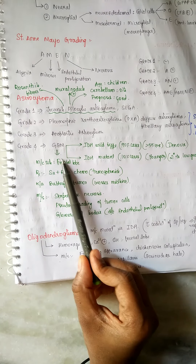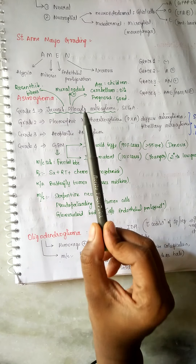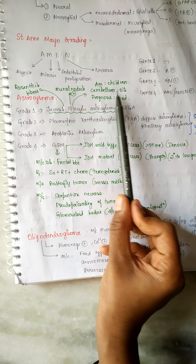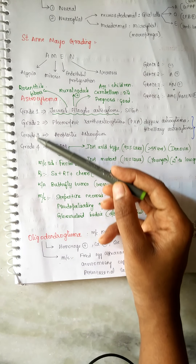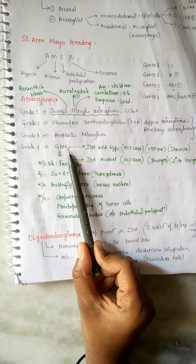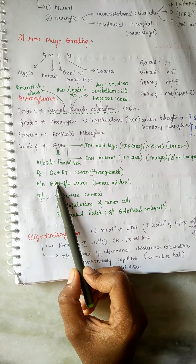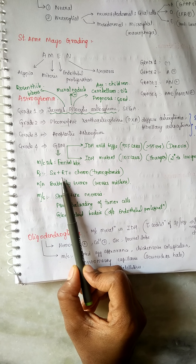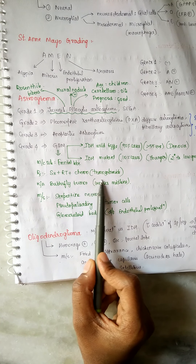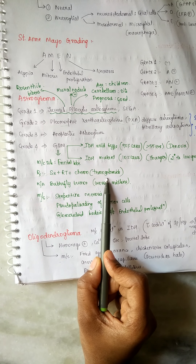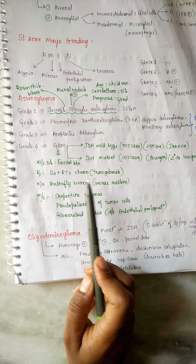GBM (Glioblastoma Multiforme) occurs most commonly in the frontal lobe. As the grade increases, malignancy also increases, so GBM is the most malignant form of the astrocytoma group. Treatment requires surgery, radiotherapy, and chemotherapy. The chemotherapy agent of choice is temozolomide. GBM is a tumor that crosses the midline, so it is also known as the butterfly tumor.